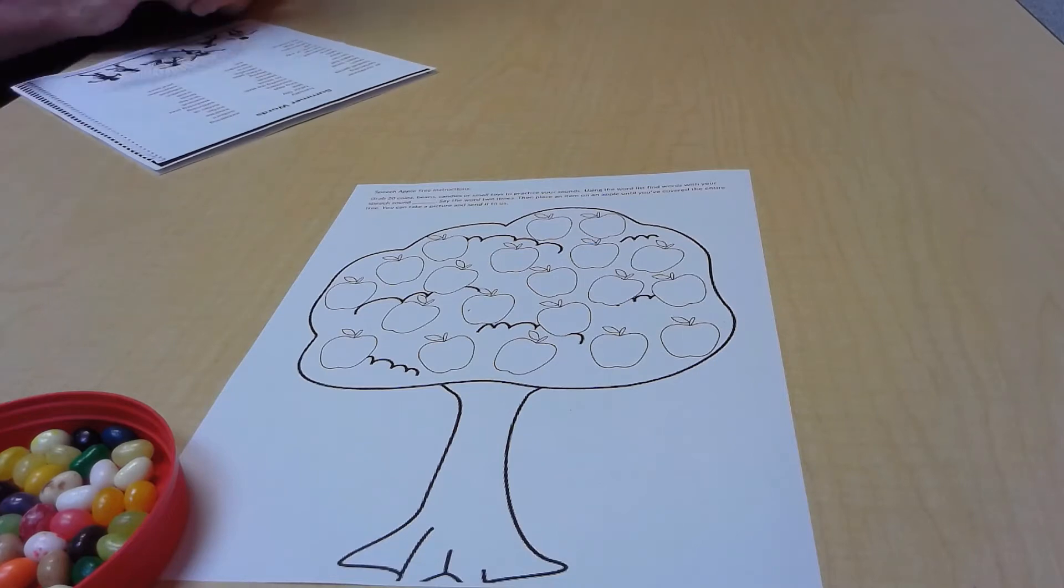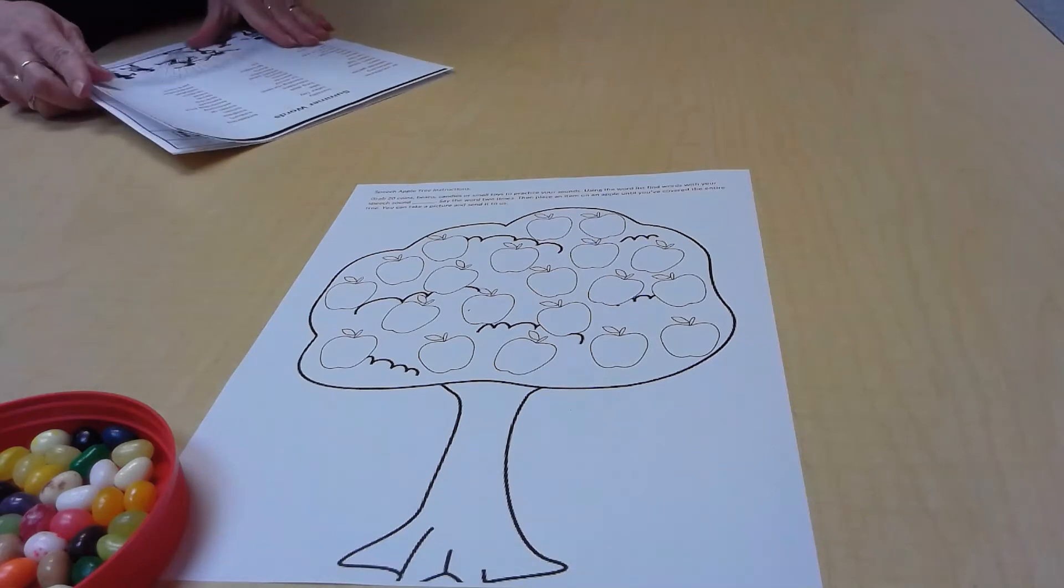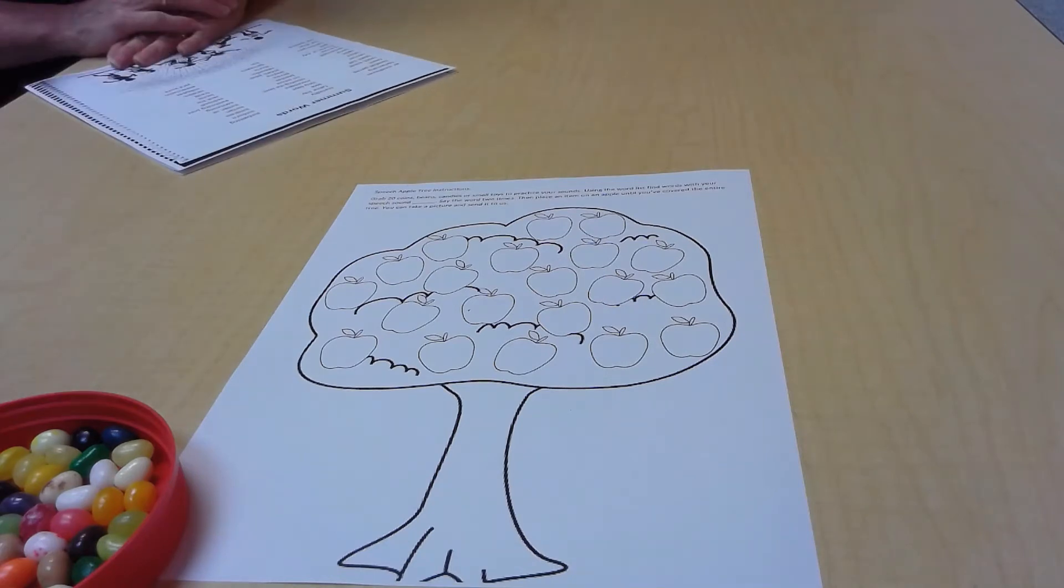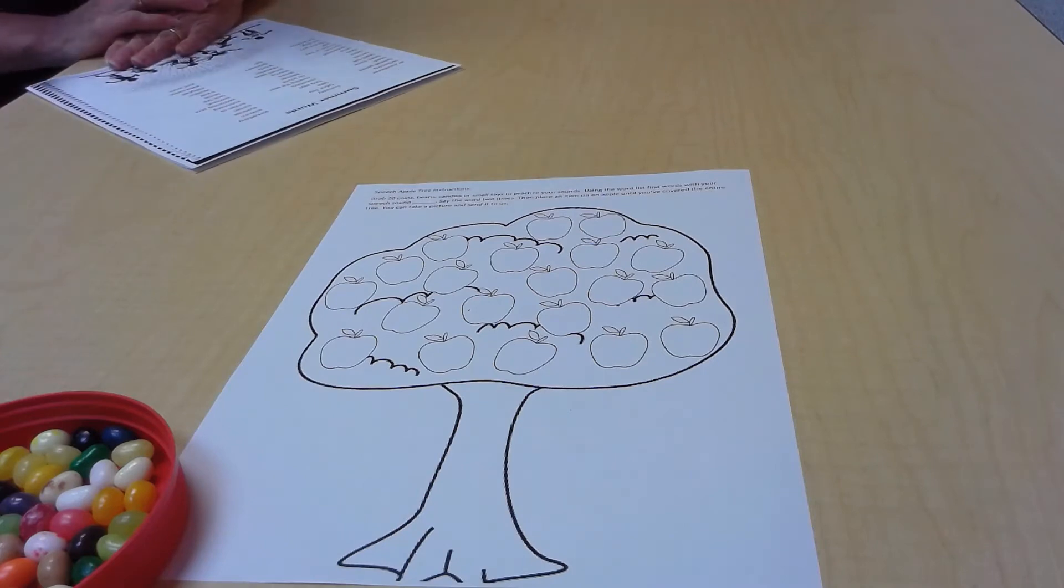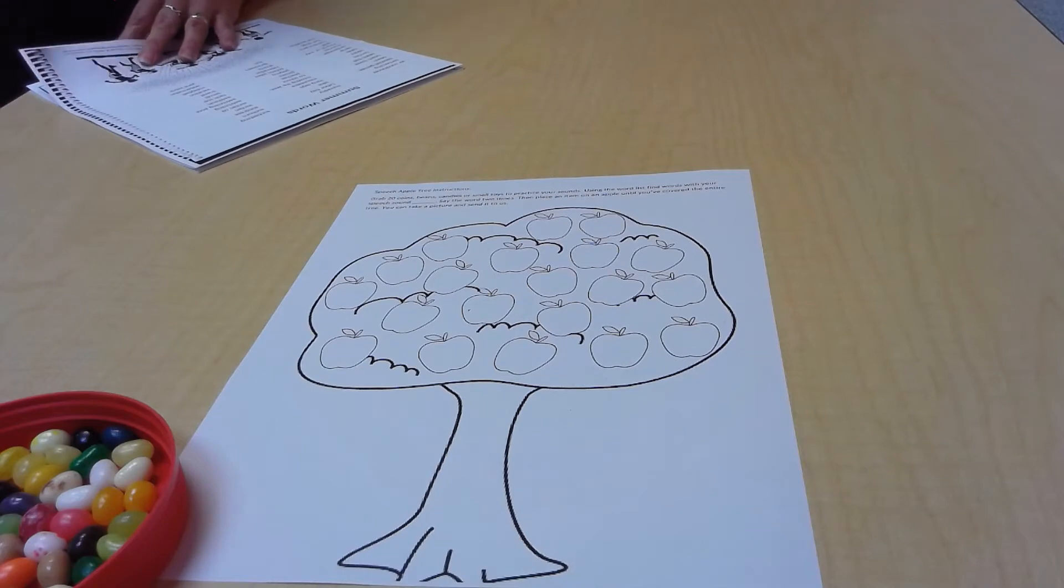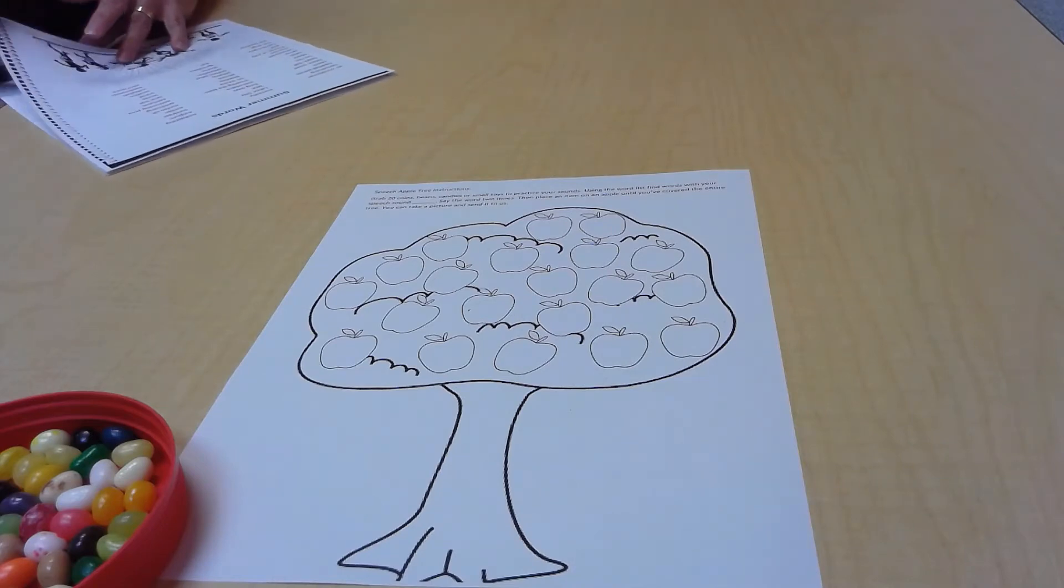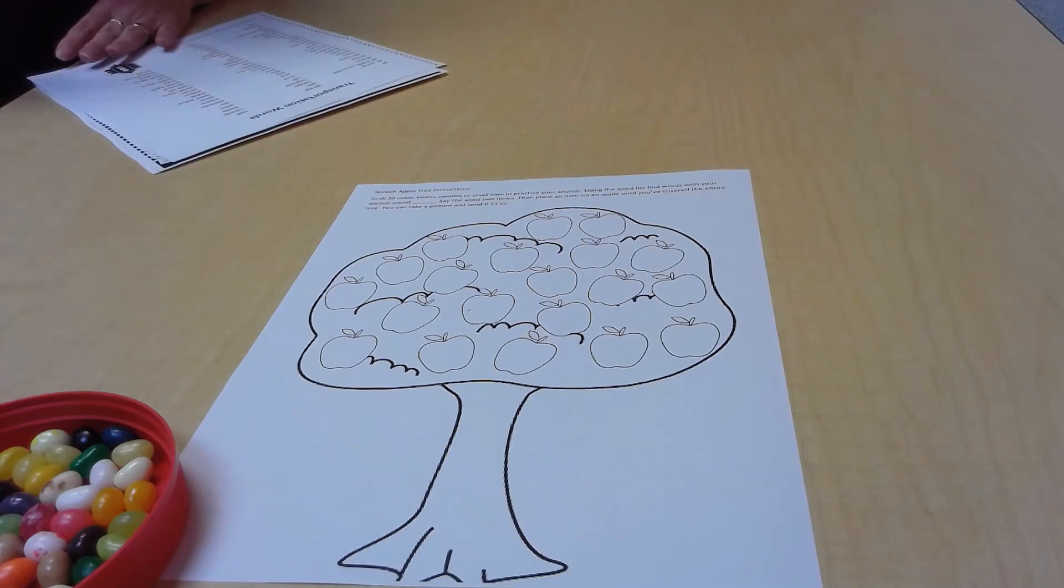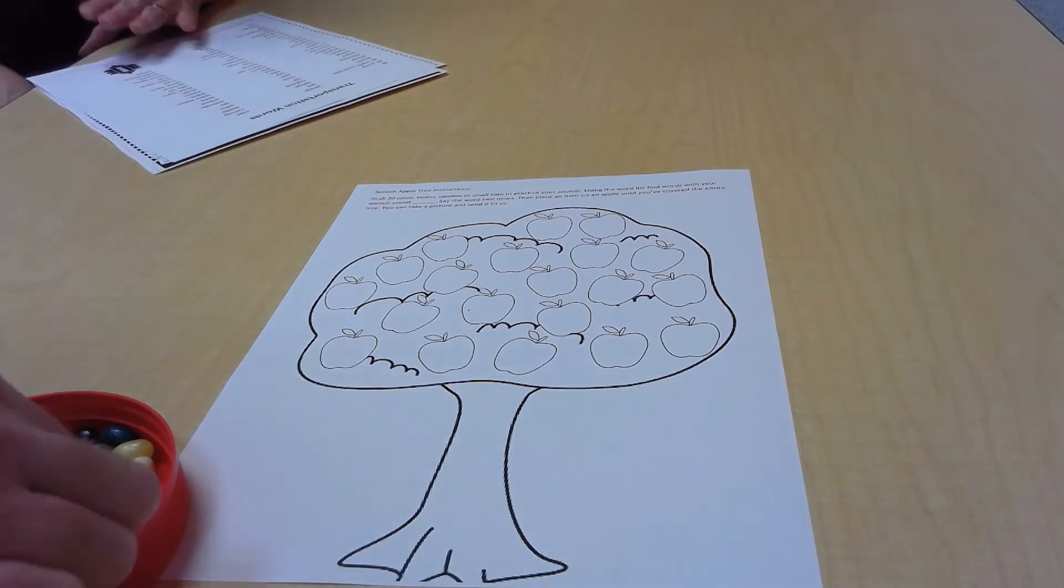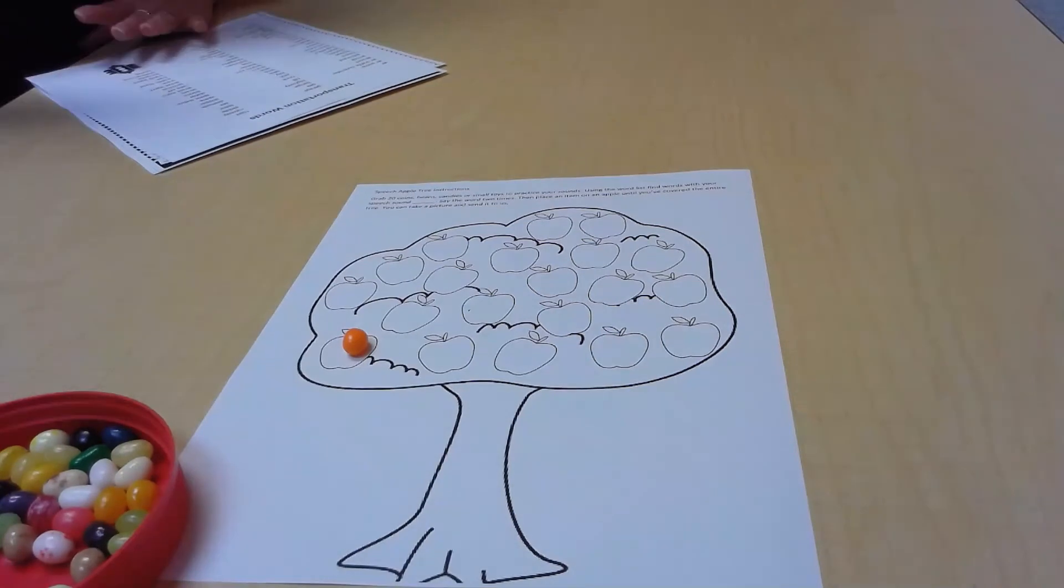So Miss Jennifer is working on R today. She's going to say her R words. And we're going to practice and show you exactly how to do this. And you're going to say them two times. All right. The very first word I want Miss Jennifer to say is rake. Rake. Good job, Miss Jennifer. Rake. Good. You may now place a jelly bean on an apple. The whole idea is to make this apple tree just beautiful with color. So that's what we're working on.